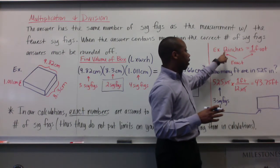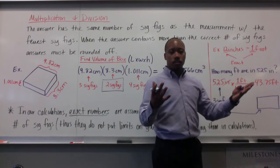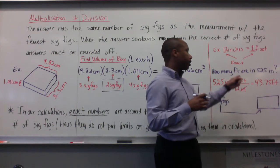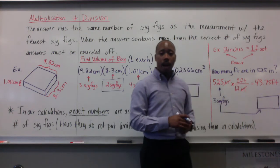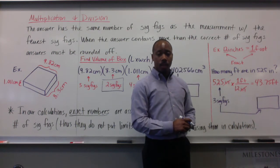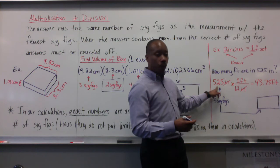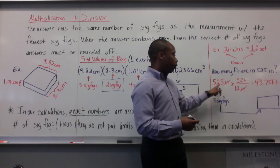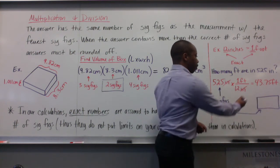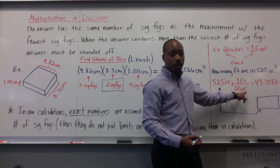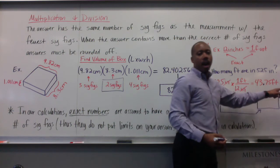This is an exact number — we know that there are 12 inches in one foot. There's no uncertainty there; it's an accepted value. So if I was asked how many feet are in 525 inches, I can set up the equation: 525 inches times one foot over 12 inches. The inches cancel out, giving us 43.75 feet.